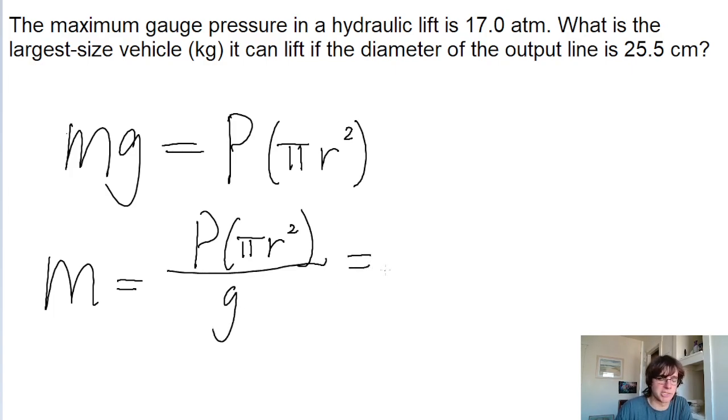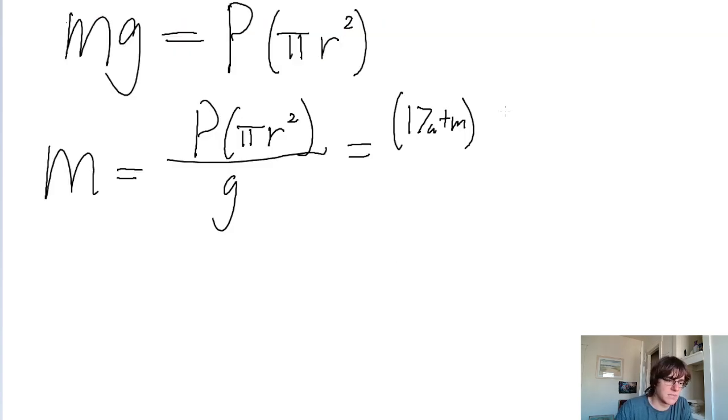So the maximum pressure is 17 atmospheres, except we want to convert this from atmospheres into newton per meter squared. Since that is how our units work, times 10 to the power of 5, so 1.013 times 10 to the power of 5 newton per meter squared per atmosphere multiplied by pi.